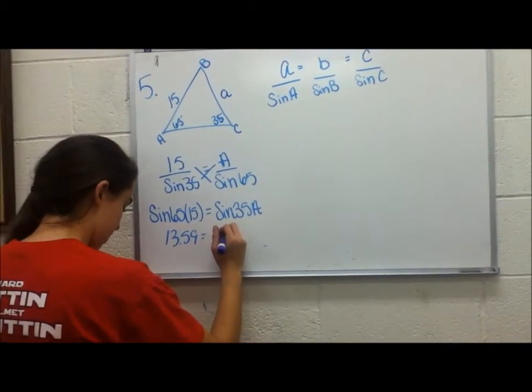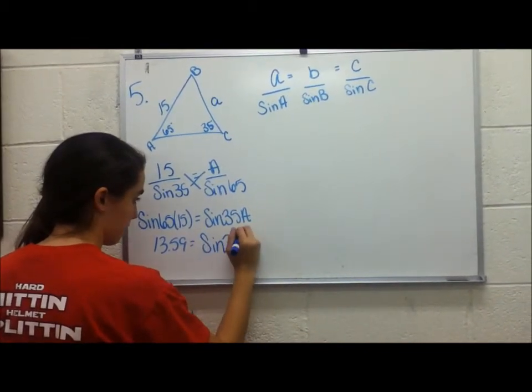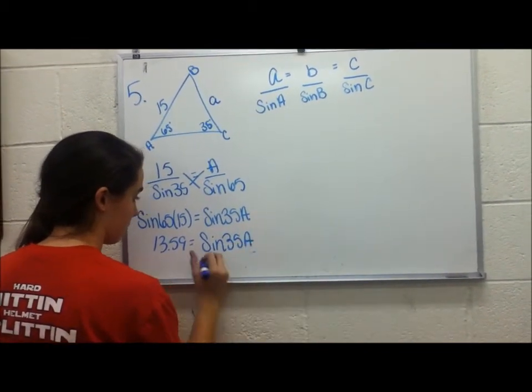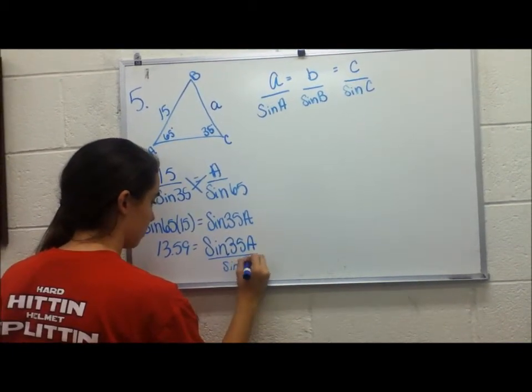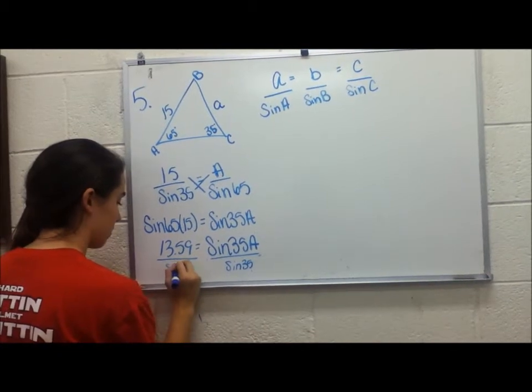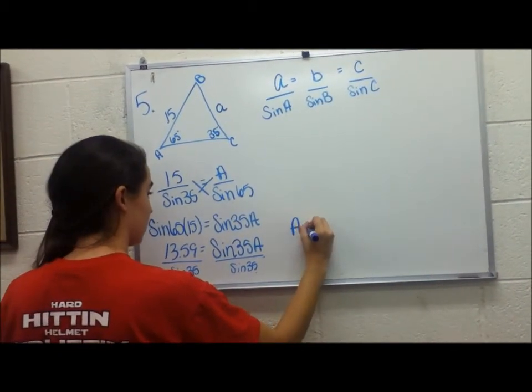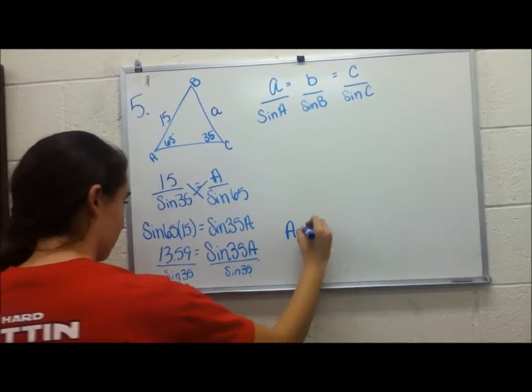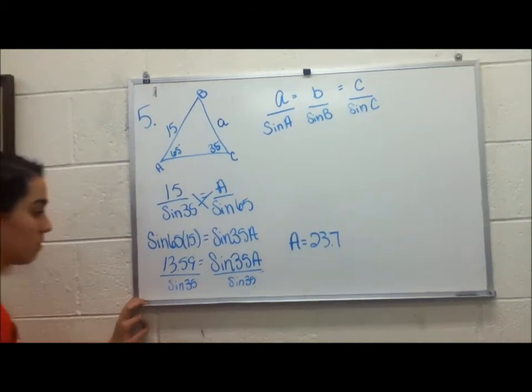Once you work out the problem, you get 13.59 equals the sine of 35A. And then you're going to divide by sine of 35. Then you solve that and you get A equals 23.7.